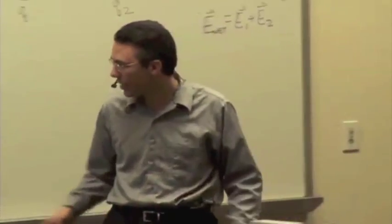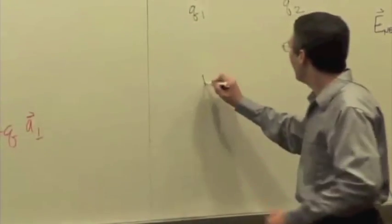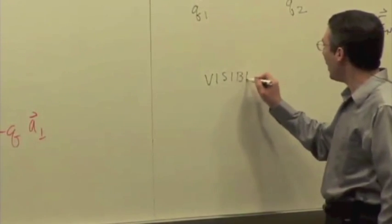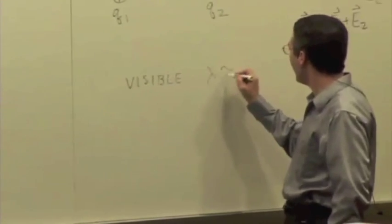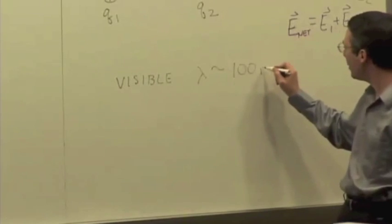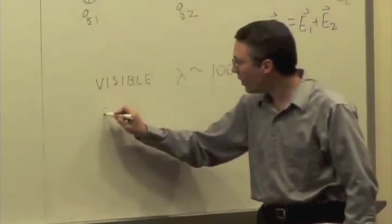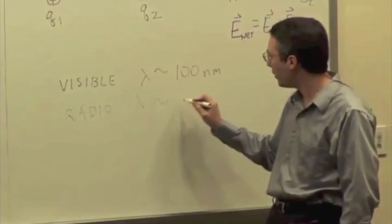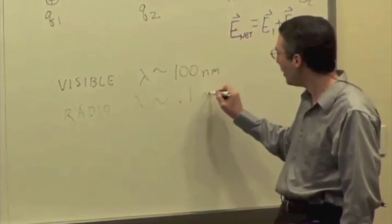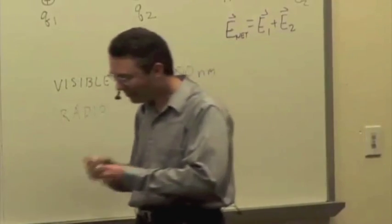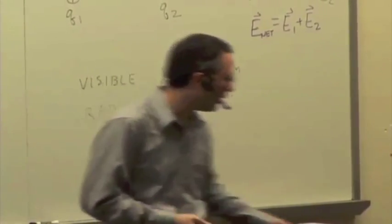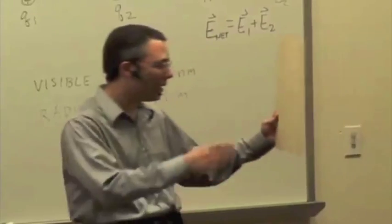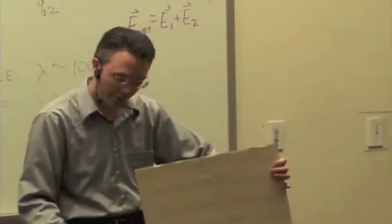For visible light, you're talking about wavelengths on the order of hundreds of nanometers, whereas for radio, this thing is a decimeter radio transmitter. You're talking about wavelength on the order of 0.1 meters. So it's 10 to the ninth times larger for radio than it is for visible light.